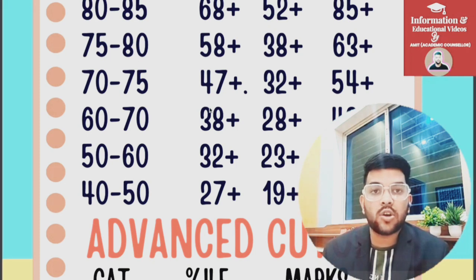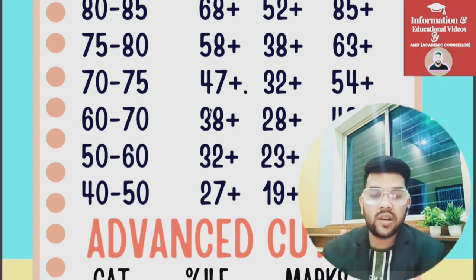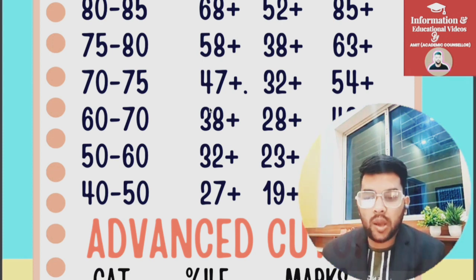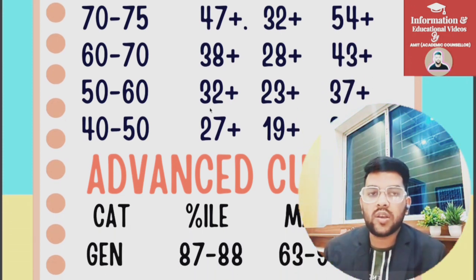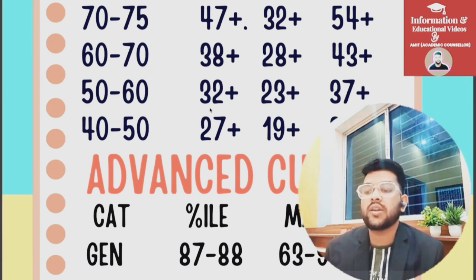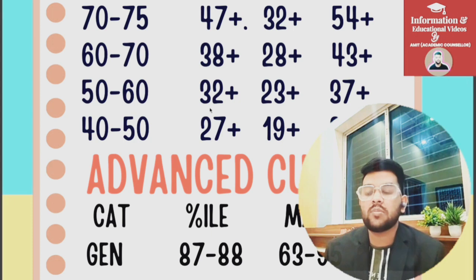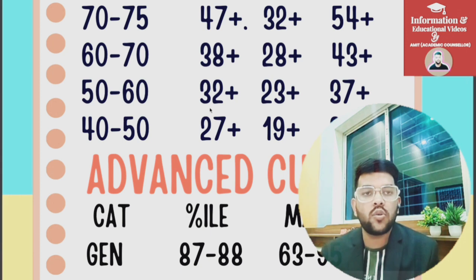Now for JEE Advanced cutoff — this is very important updated data. With the number of students increasing and the paper becoming a little more difficult, the minimum percentile and marks required by category are as follows. For General category, 87 to 88 percentile is required to qualify for JEE Advanced, whether in the first or second attempt.